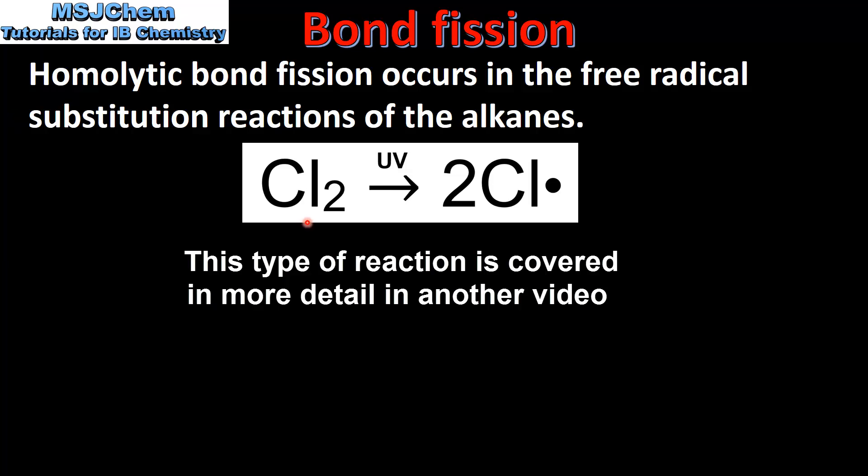For example the bond between two chlorine atoms in a molecule of chlorine breaks homolytically with each atom taking one electron from the bond. This produces two chlorine free radicals. Note that this type of bond fission occurs in the presence of UV light.